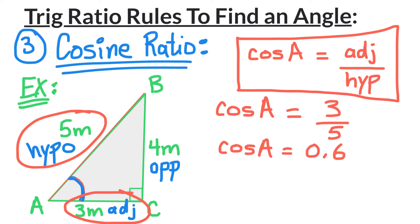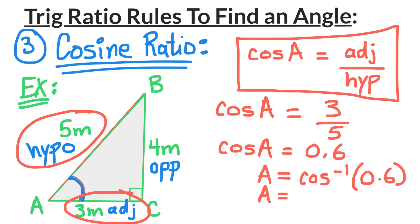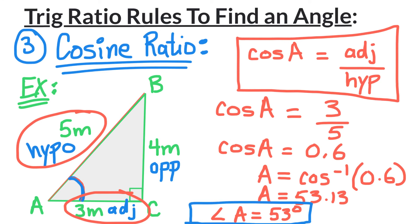3 divided by 5 equals 0.6. Now we solve for A by bringing cosine to the other side to get cosine inverse. Press second or shift then the cosine button on your calculator to get cosine inverse, then plug in 0.6. You should get 53.13, which is approximately 53 degrees. Notice that we used the same triangle and angle A is always 53 degrees.